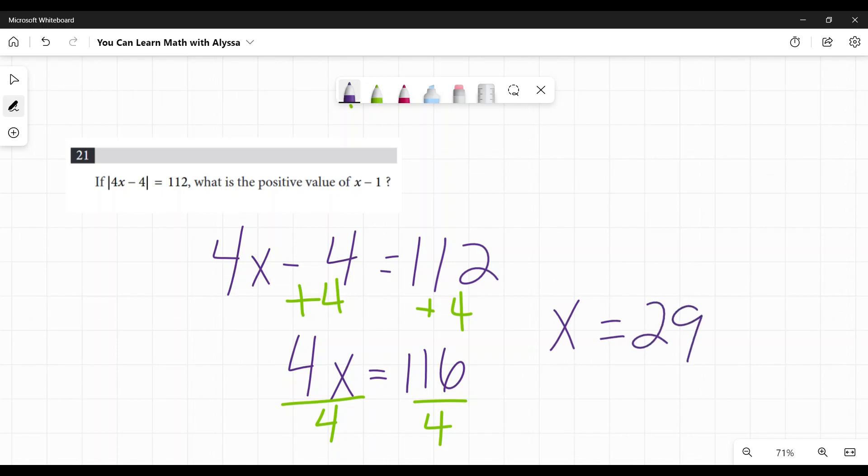But they did not ask me for the value of x. Always, always, always go back and reread your question before you put your final answer in. Because they are counting on students to get in the weeds of this and then reach the end and go, x is 29, 29, move on. And they got it wrong. Nope, they did not ask for x. They asked for what is x minus 1.